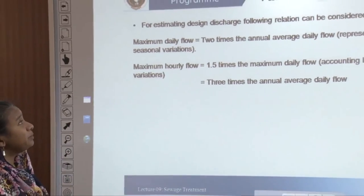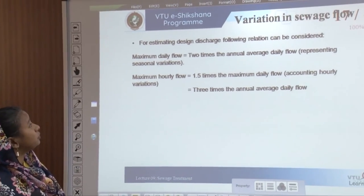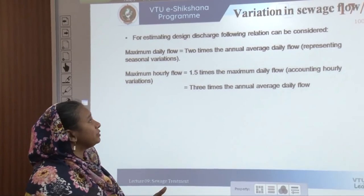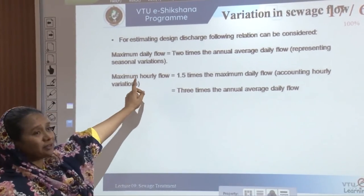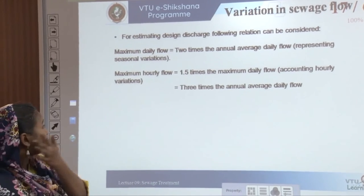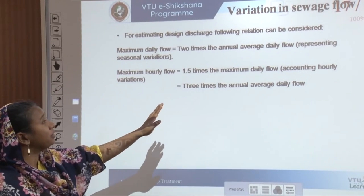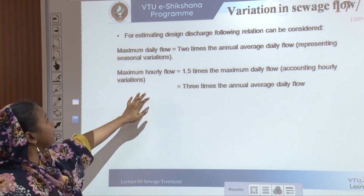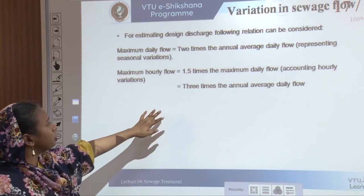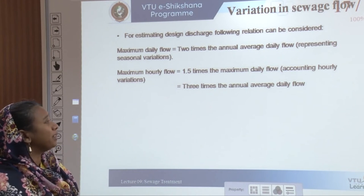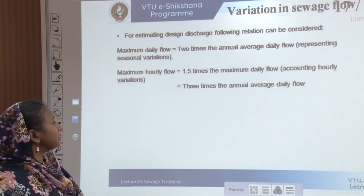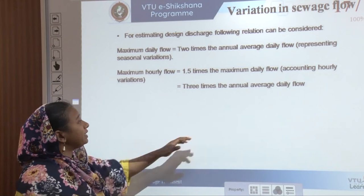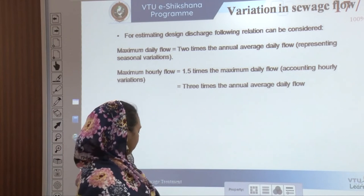For estimating variation in flow, the design discharge should consider: maximum daily flow as 2 times the annual average daily flow, representing seasonal variation; hourly flow as 1.5 times the maximum daily flow for hourly fluctuations; and a peak of 3 times the annual average daily flow.